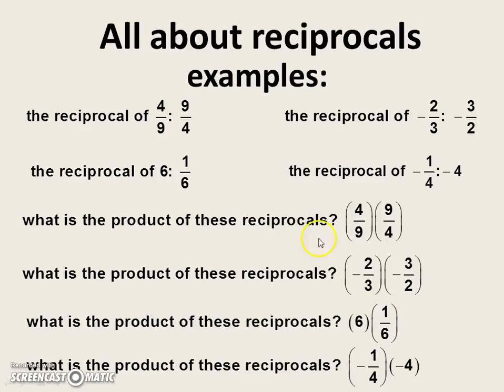What is the product of these reciprocals? Four-ninths times nine-fourths. Product means multiplying, so we're multiplying these two reciprocals.